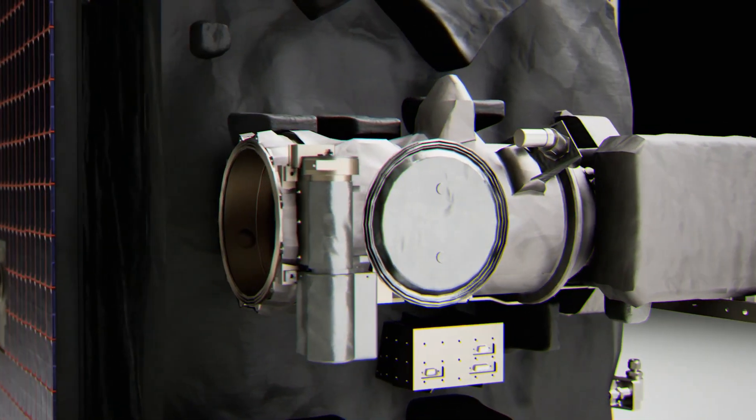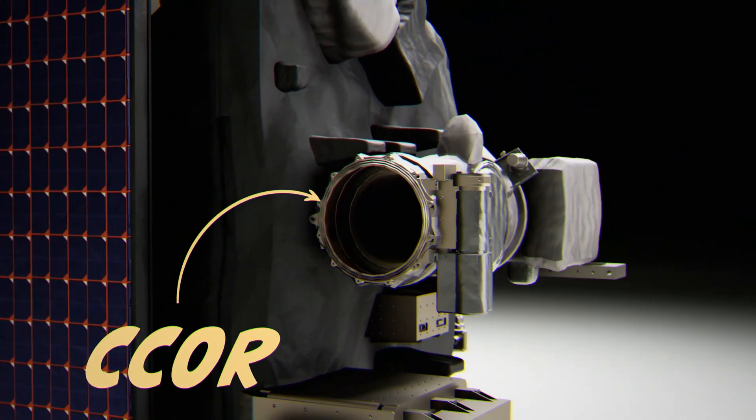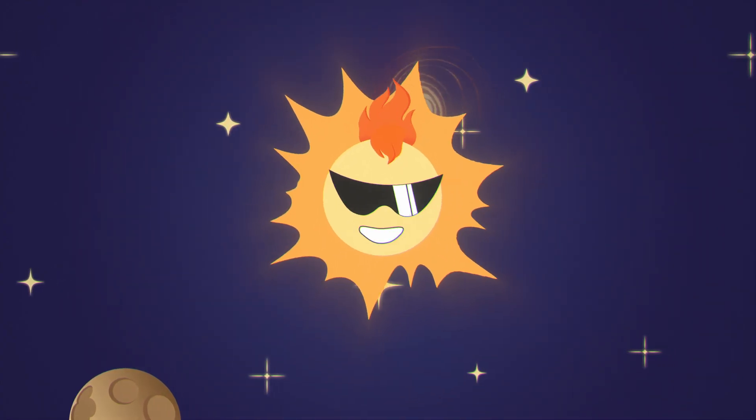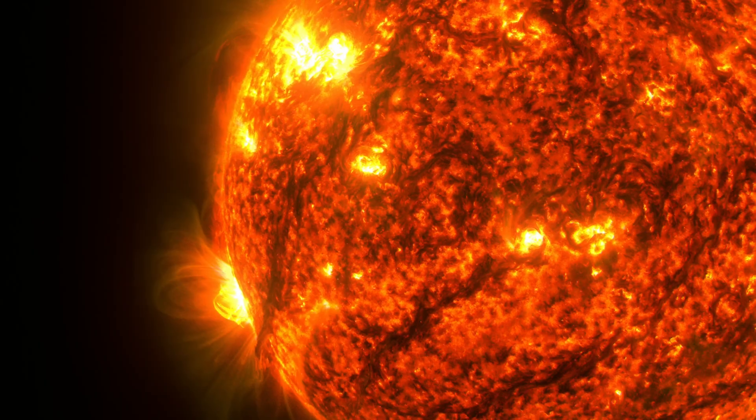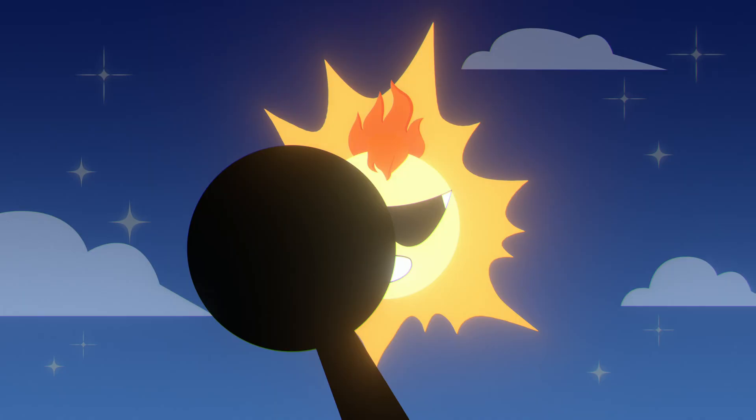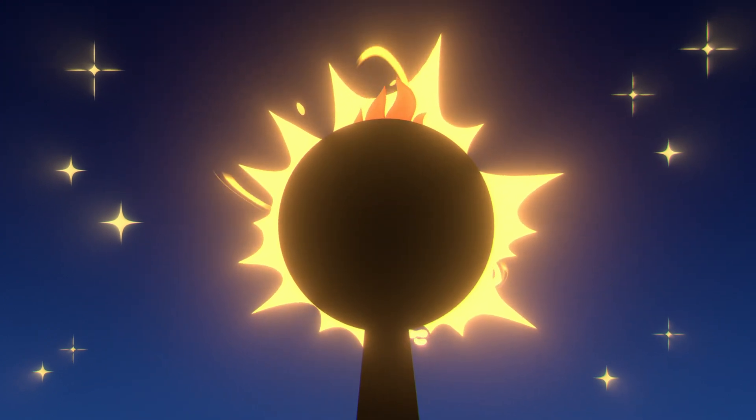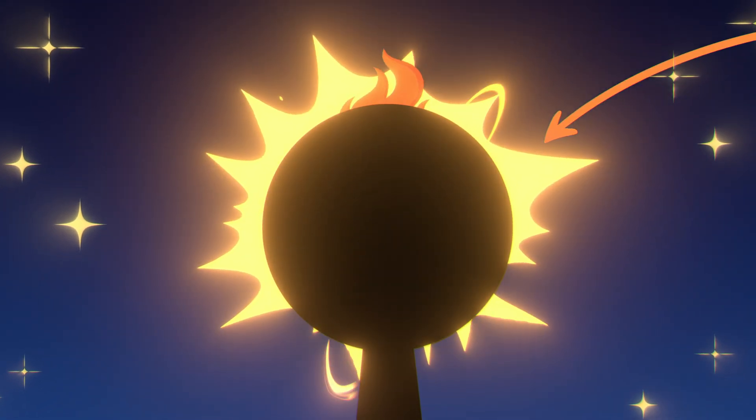SWIFO L1 is equipped with an incredible camera called the Compact Coronagraph, also called C-Core. It's like my personal photographer, capturing every moment of my explosive performance. By blocking out my brightest light, it can focus on the real action, like the intense activity in my corona. Pretty cool, right?